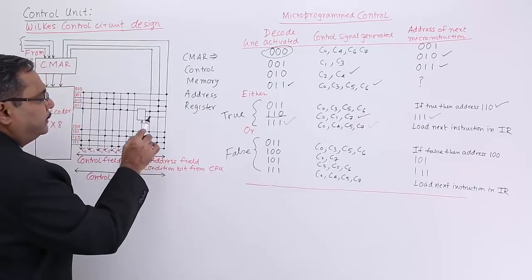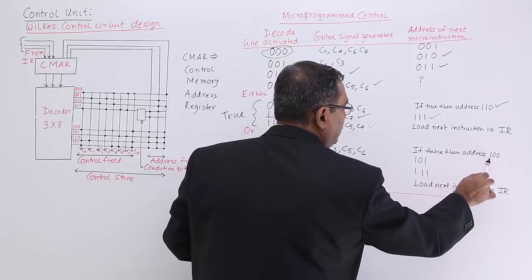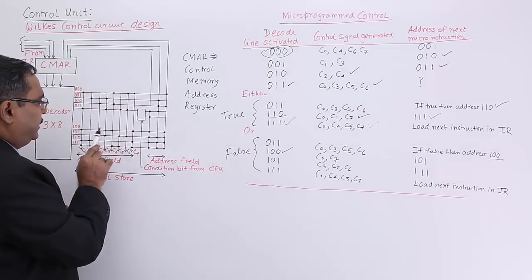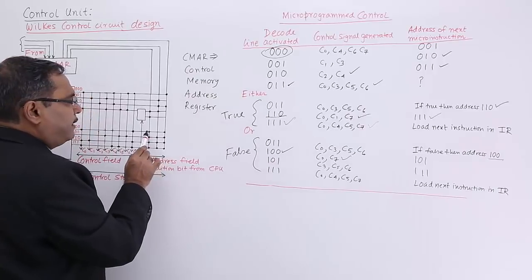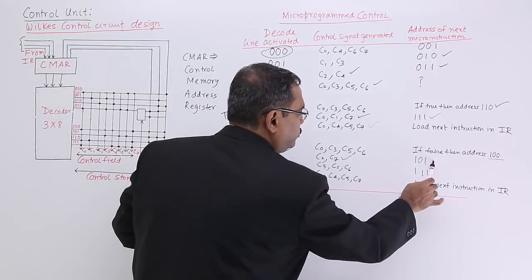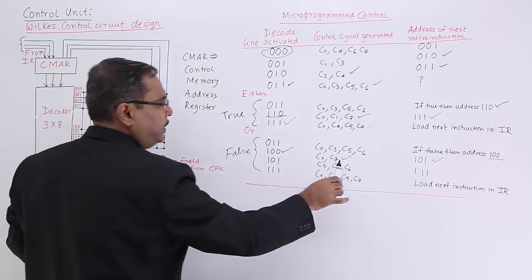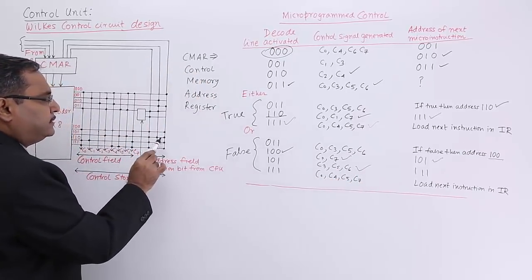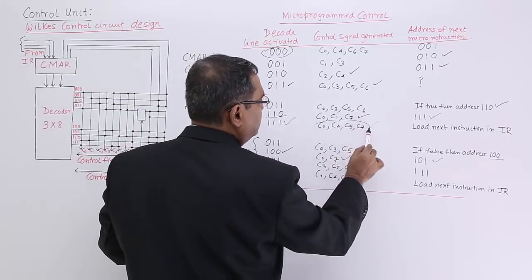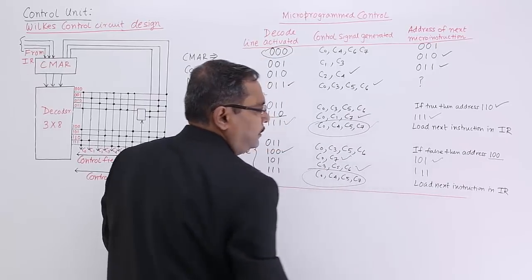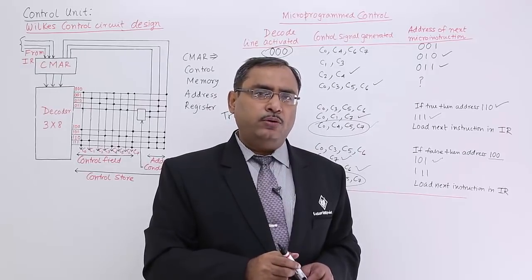If the condition is false, then the return address will be 1 0 0. At 1 0 0, the control signals C0 and C7 are generated, and the return address is 1 0 1. At 1 0 1, three control signals get generated, and the return address is again 1 1 1. The same set of control signals will get generated at 1 1 1, indicating end of the micro program — please load the next instruction from the Instruction Register to execute the next micro program.